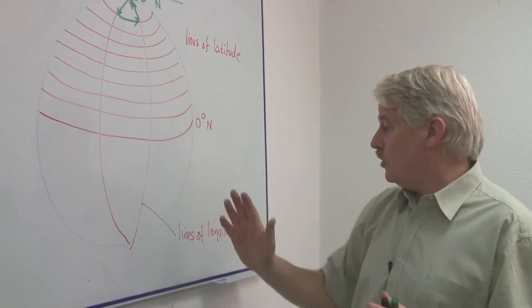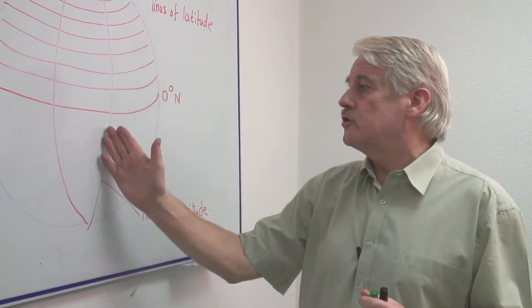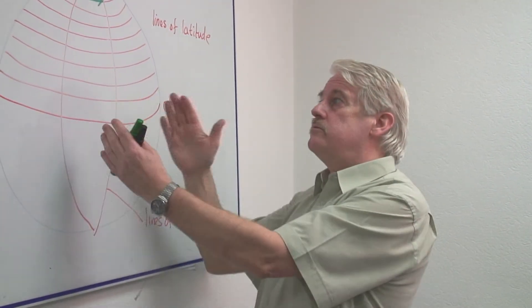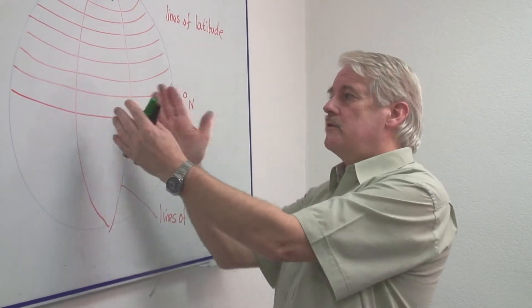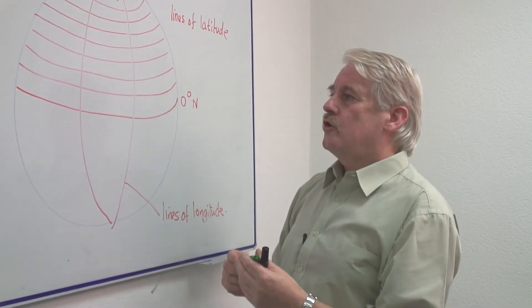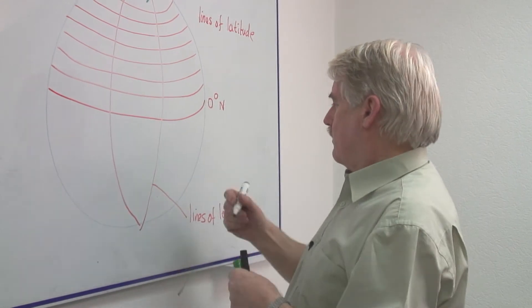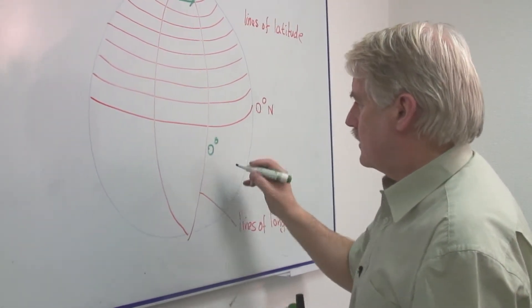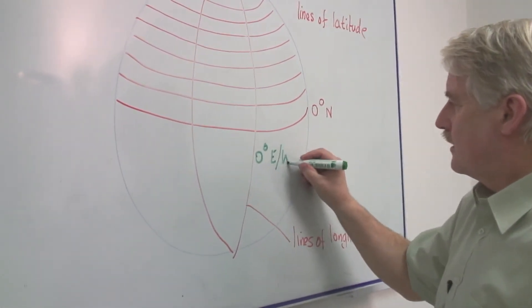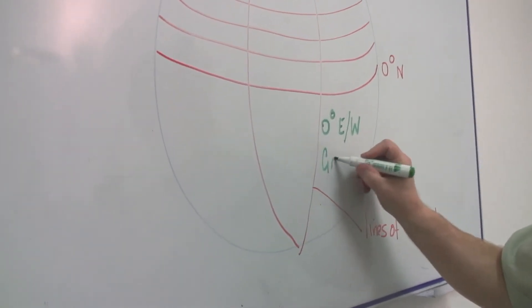Longitude of course is different because longitude is related to how far around the earth we are on great circles. And of course zero degrees east or west goes through Greenwich.